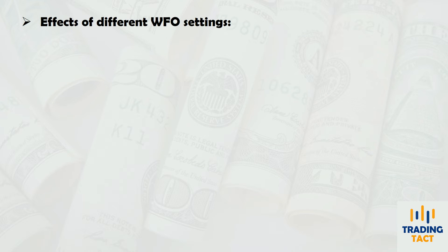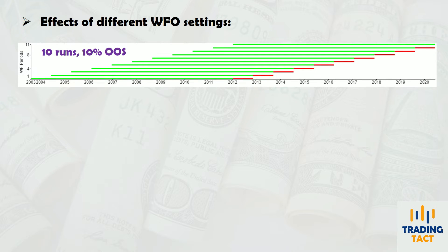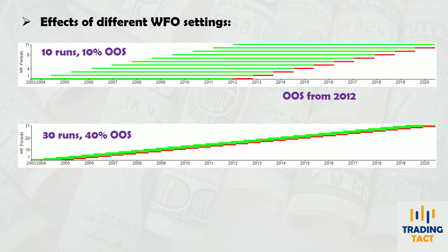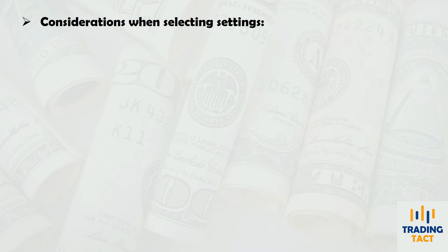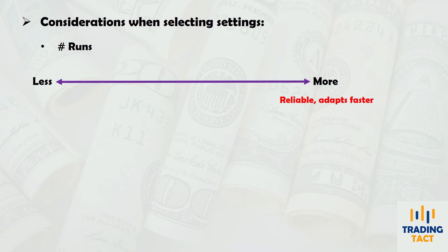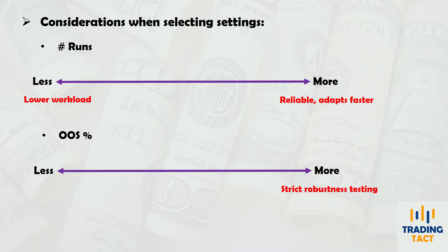These two settings can completely change the complexion of your optimization. The walk-forward optimization on top had 10 runs and a 10% out-of-sample percent, giving a complete out-of-sample backtest starting from 2012. The bottom one had 30 runs and a 40% out-of-sample percent, giving a longer out-of-sample test from 2005. There are trade-offs involved: you want sufficient runs to ensure results are not due to chance, but this also means more frequent re-optimizations, which can be a hassle if you manage a large portfolio. Likewise, a larger out-of-sample percent produces a longer overall out-of-sample test, but if it's too large, you will likely have too few trades in the optimization period for a reliable estimate of the optimal strategy parameters.